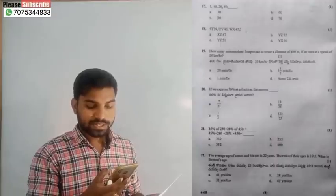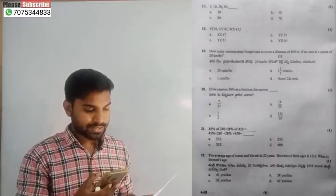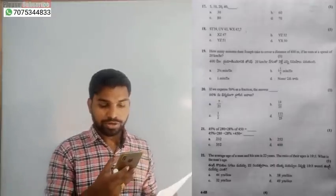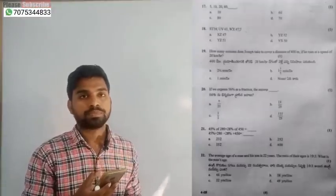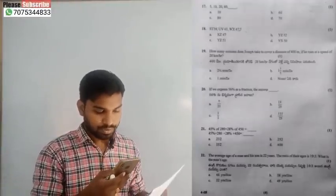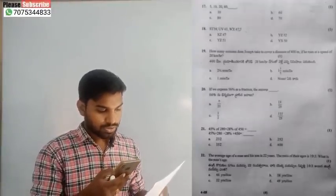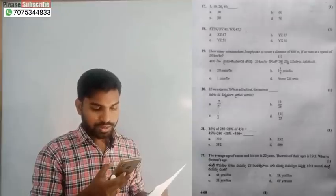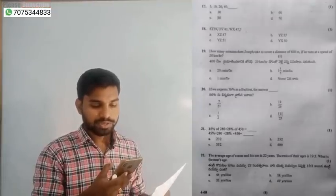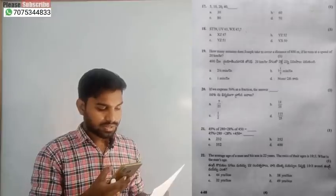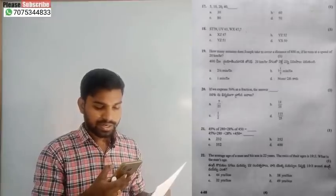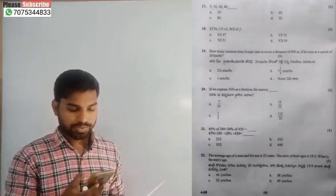Question number 20: 56 in fractions — 56 by 100 simplifies to 14 by 25, option B. Question number 21: if you calculate the percentage, the answer is 252 — option B. Question number 22: average age and ratio proportion mix — the final answer is 38 years, option B.